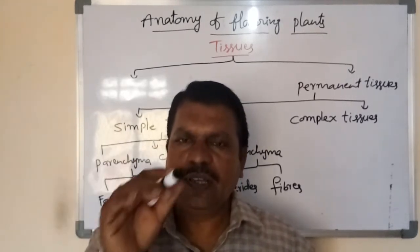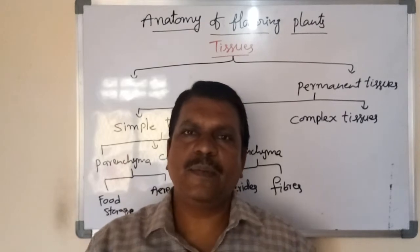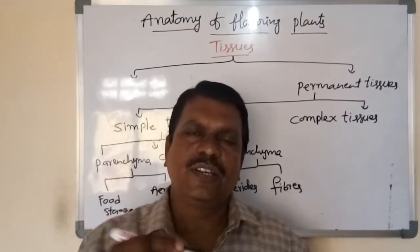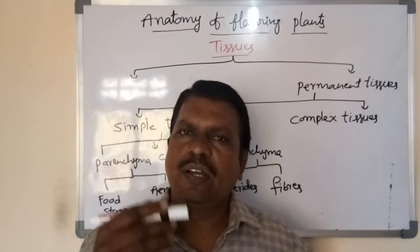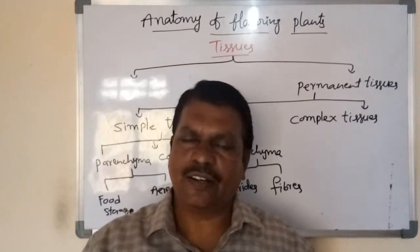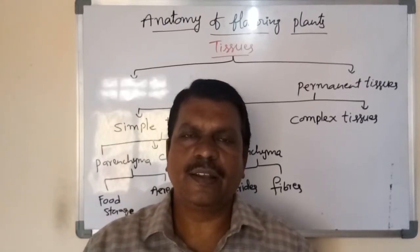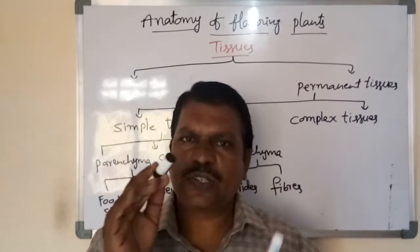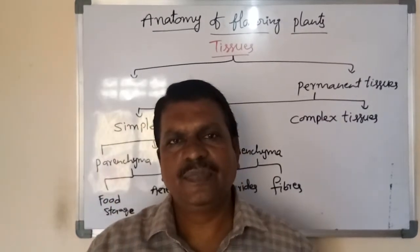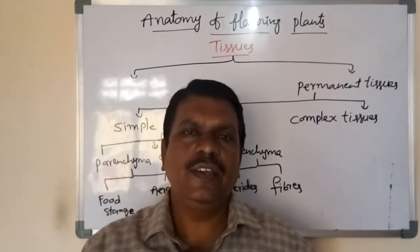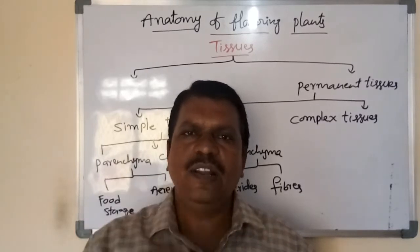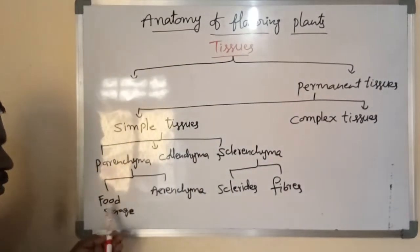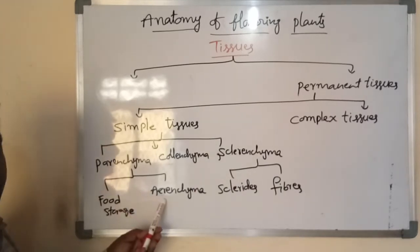In case of root, the same parenchyma stores food material — example: carrot, radish, beetroot, turnip, sweet potato, etc. In case of cortex, the same parenchyma stores reserve food material. In such a way, parenchyma performs several functions. Parenchyma is of two kinds: food storage tissue and aerenchyma. Food storage tissue — examples: roots like carrot, beetroot, radish, sweet potato, etc.